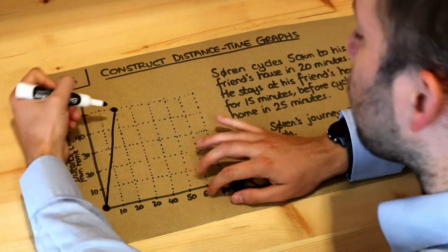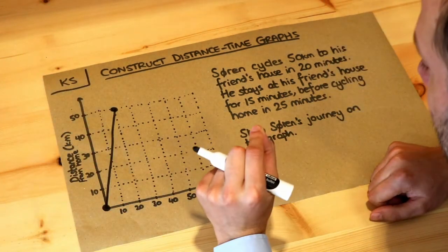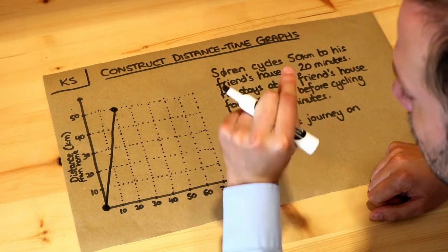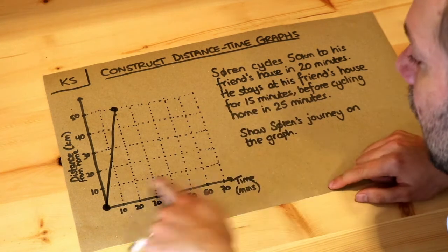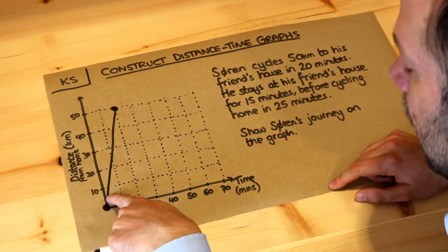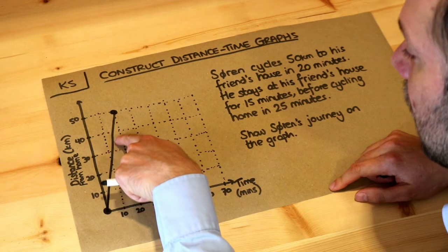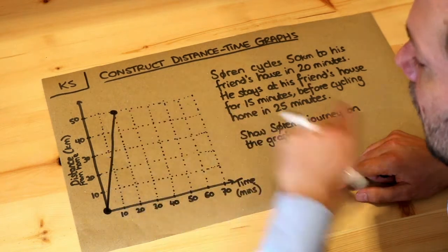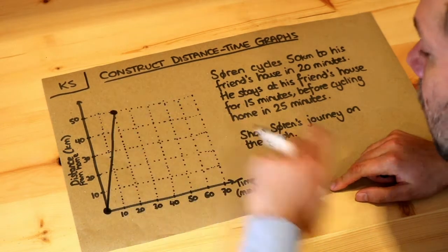The reason is that we're assuming he's cycling at a constant rate, a constant speed. That means he's going the same distance for each minute that passes, so that should be a straight line.